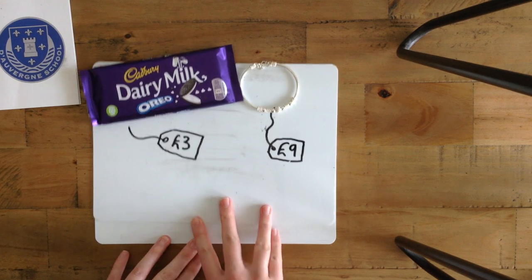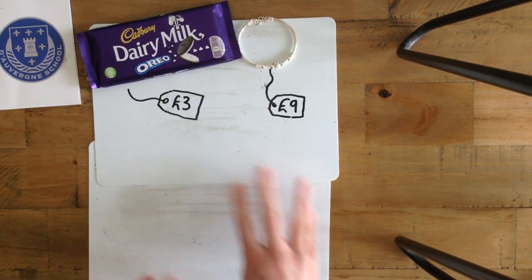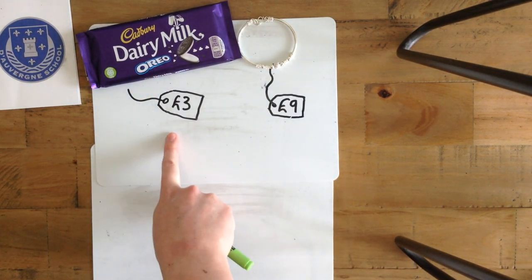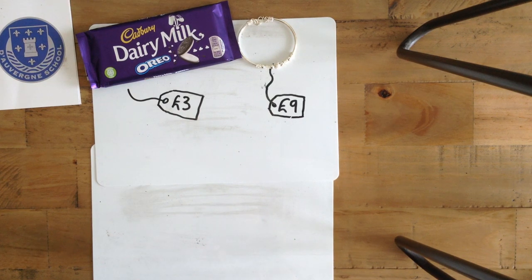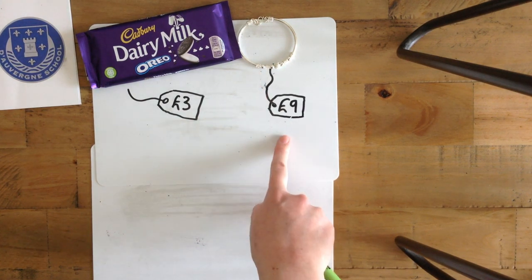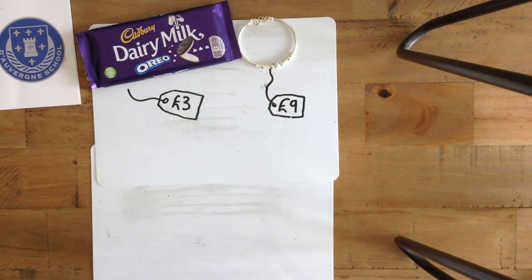Sam went to the shop. He bought some chocolate for £3. He also bought a bracelet for £9. How much has Sam paid in all?